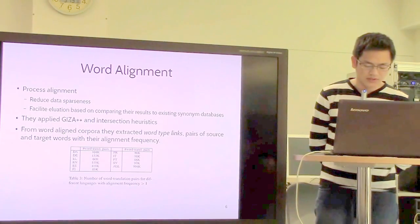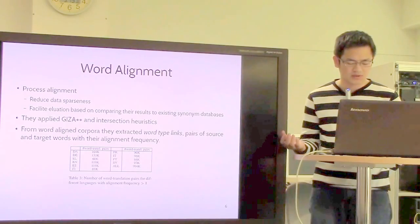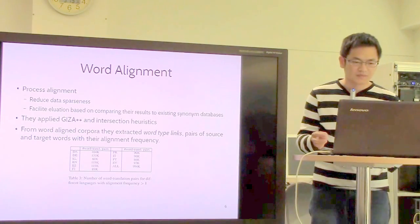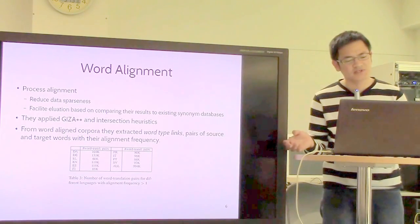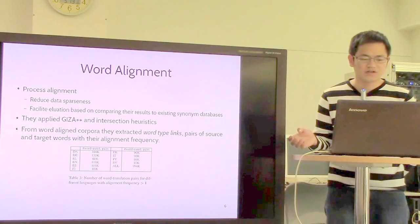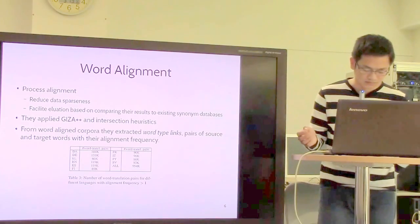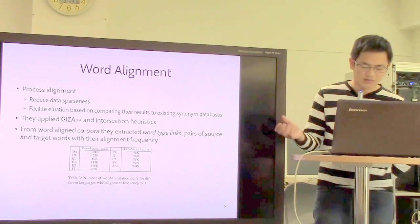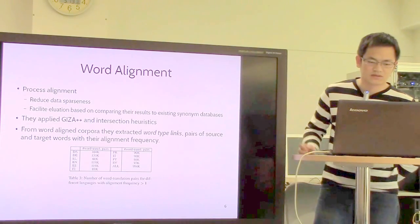The multilingual approach processes automatic word alignment of parallel corpus from the Dutch source to other target languages. In the first process, the preprocessing with alignment, they reduce the data faster to facilitate evaluation by comparing results to existing synonym databases. They use the statistical machine translation IBM alignment model.